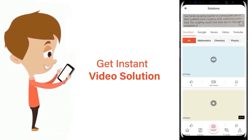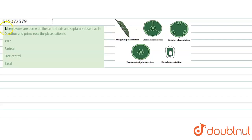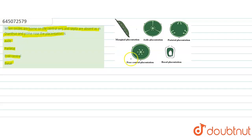The question says that when ovules are born on the central axis and septa are absent, as in Dianthus and Primrose, the placentation is — with four options: option one is axile, option two is parietal, option three is free central, and option four is basal placentation.